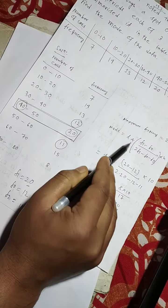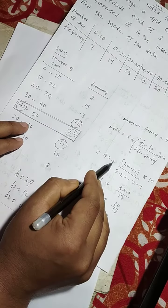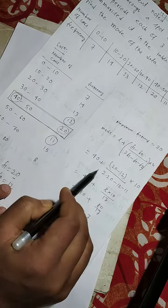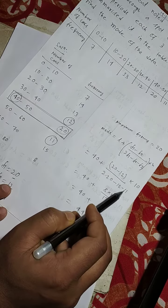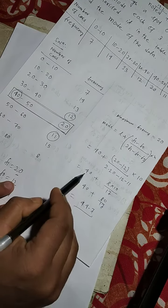So, here replacing l by 40. So, 40 plus (20 minus 12) by (2 into 20 minus 12 minus 11) into 10.